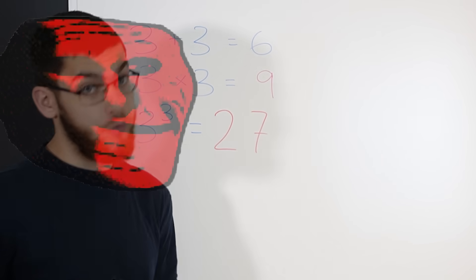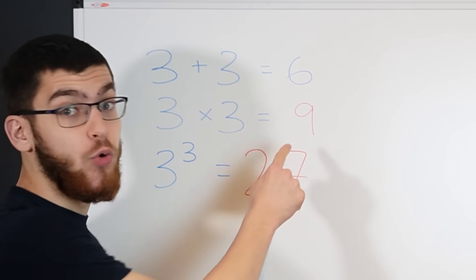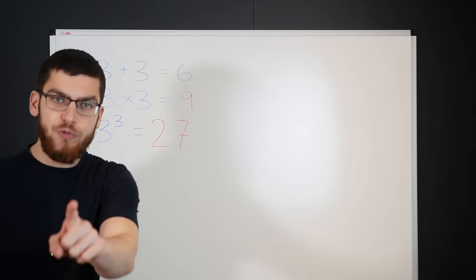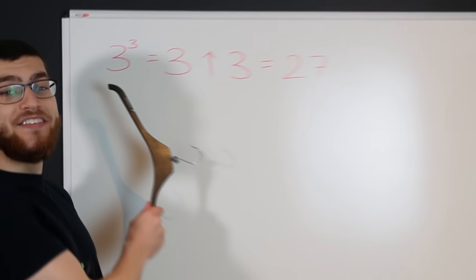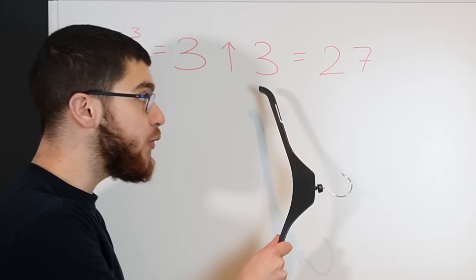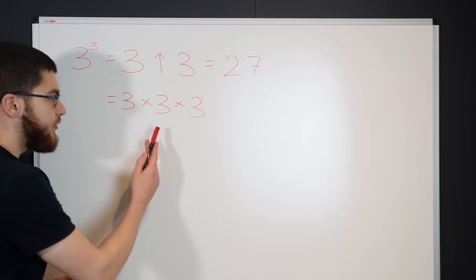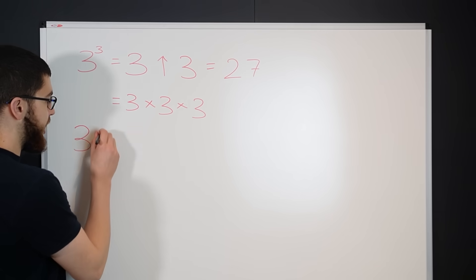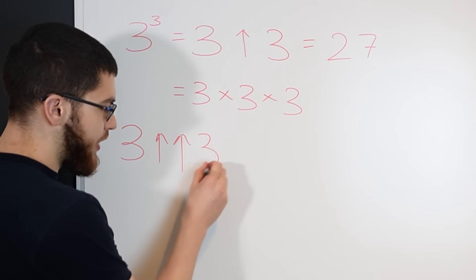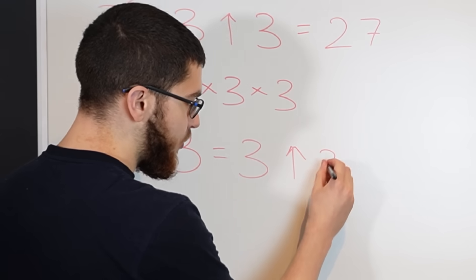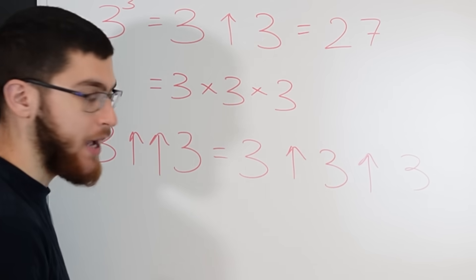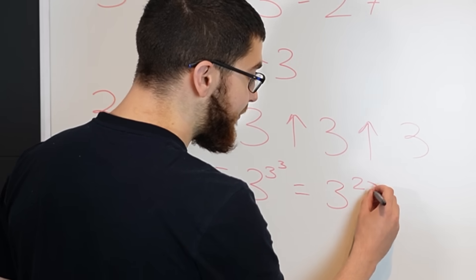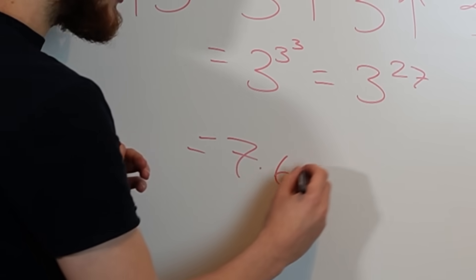3 plus 3 equals 6, 3 times 3 equals 9, and 3 to the power of 3 equals 27. Let's denote 3 to the power of 3 using arrows: 3↑3 = 27, which is just 3 times 3 times 3 — the previous operation repeated 3 times. We can define the next operation as 3↑↑3, which is 3↑3↑3 repeated 3 times. This equals 3 to the power of 3 to the power of 3, which is 3 to the power of 27, which is 7.6 trillion.